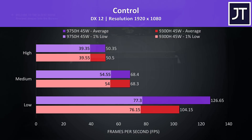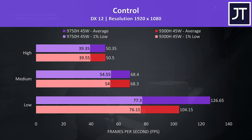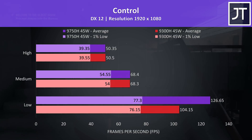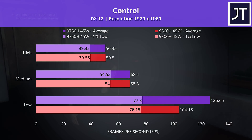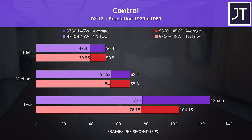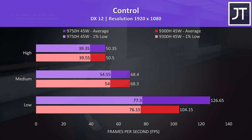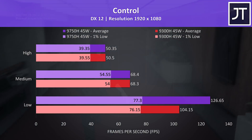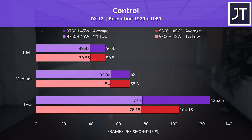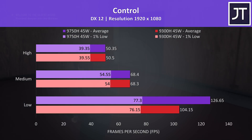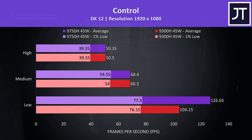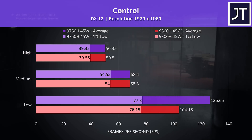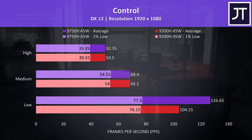Control was tested running through the same area of the game on both machines. At high and medium setting presets the performance was essentially identical, but with low settings the i7 saw a nice improvement. My guess is the low setting preset must be more CPU bound compared to others, which is why the i7 was almost 22% faster here.